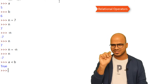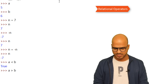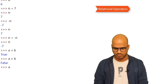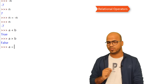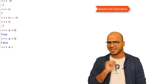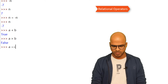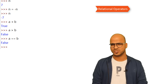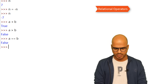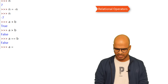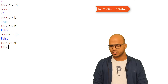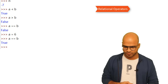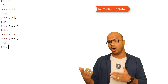You can also use greater-than. For equality comparison, you can't use single equal-to because that's assignment — you use double equal-to. With a as 5 and b as 6, a double-equal-to b returns false. If we set a to 6, then a double-equal-to b returns true.